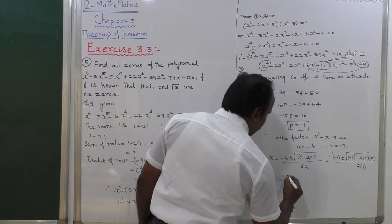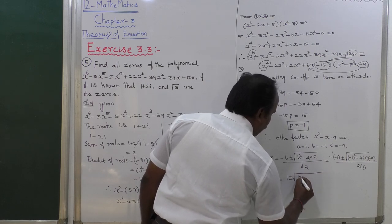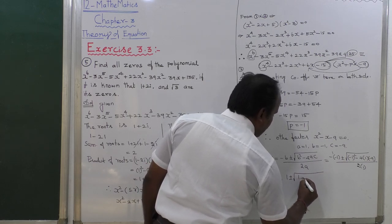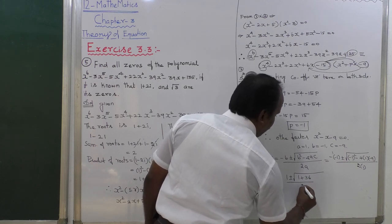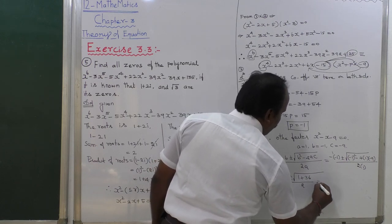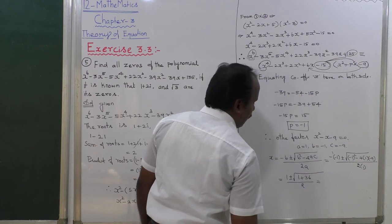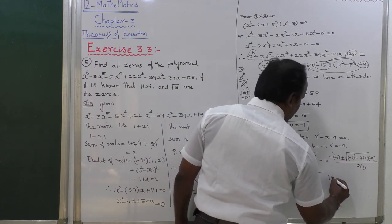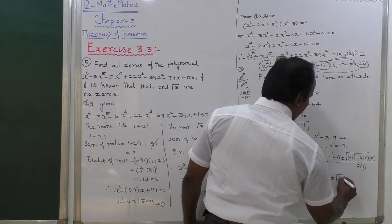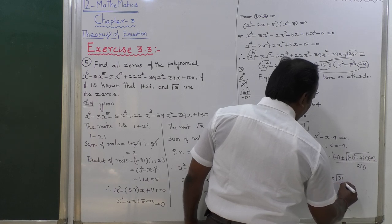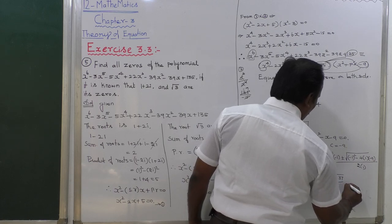Using the quadratic formula: x equals 1 plus or minus root of 1 plus 36 all divided by 2, which equals 1 plus or minus root 37 divided by 2. Those are the other two roots.